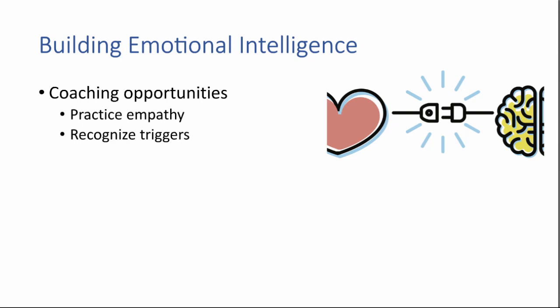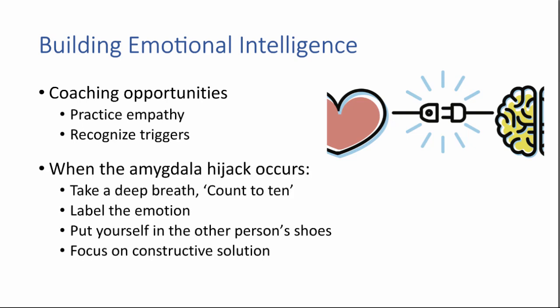To build emotional intelligence among staff, look for coaching opportunities to help people practice empathy, recognize their personal triggers, and when they have those moments of amygdala hijack, take a deep breath and count to ten — it actually works, since the hijack lasts about 20 seconds. Even better, label the emotion: say 'I'm angry and this is why.' That has a huge effect on controlling the stress hormones and bringing back cognitive processes. Teach people to put themselves in the other person's shoes, and bring every argument back to: what's the right thing to do for the patient?